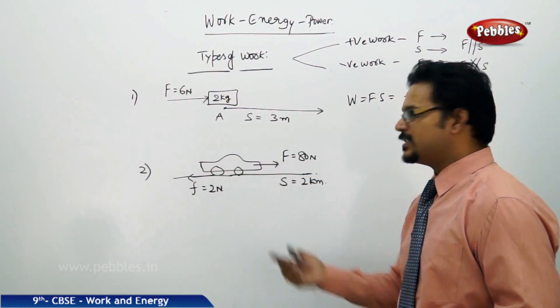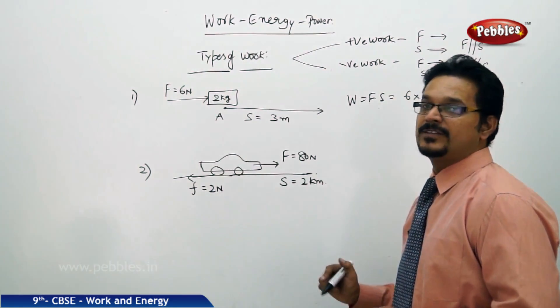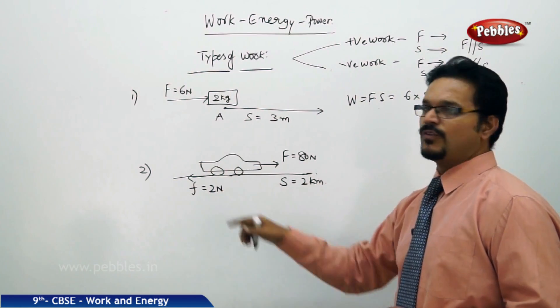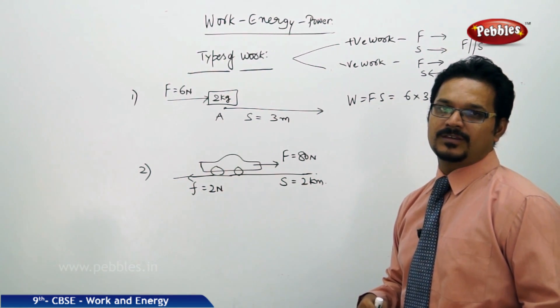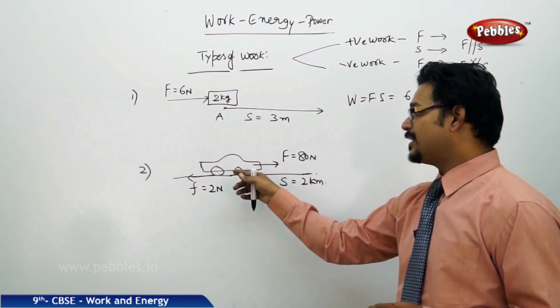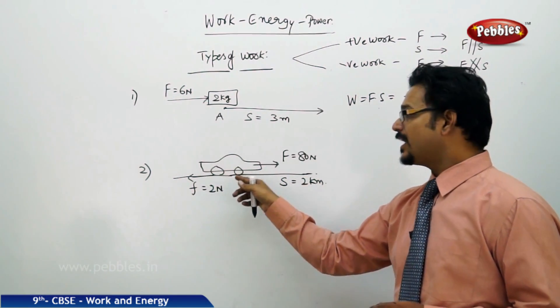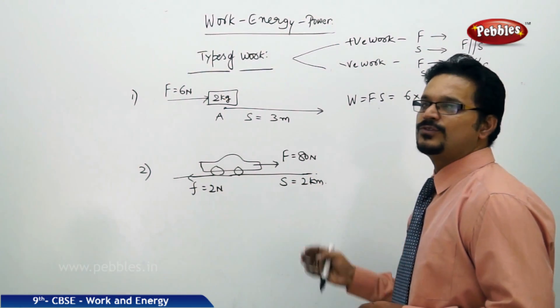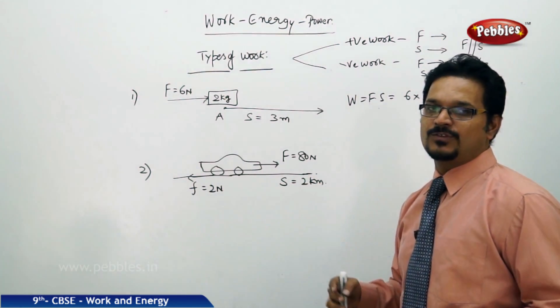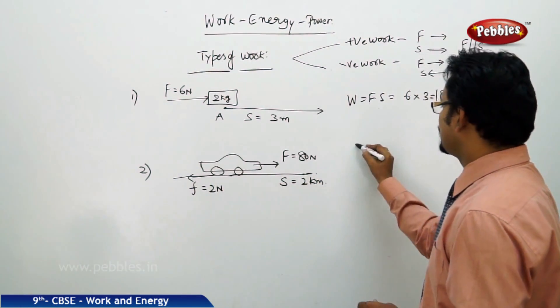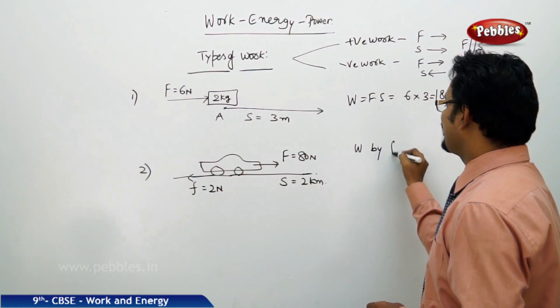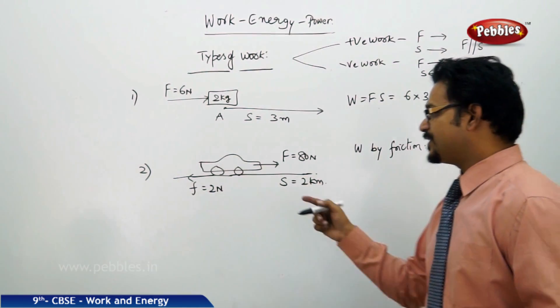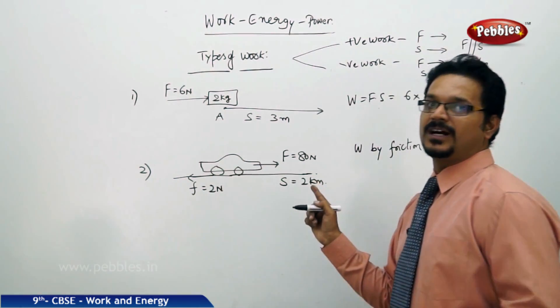See this example here. A car is moving towards the right side with its engine force of 80 Newton. But there is a frictional force acting on the body, means where? Between the tires of the car and the road. And the car travelled a distance of 2 km. If they ask the question, what is the work done? What is the work done by friction? If I ask you, friction is opposite to the motion of the car.